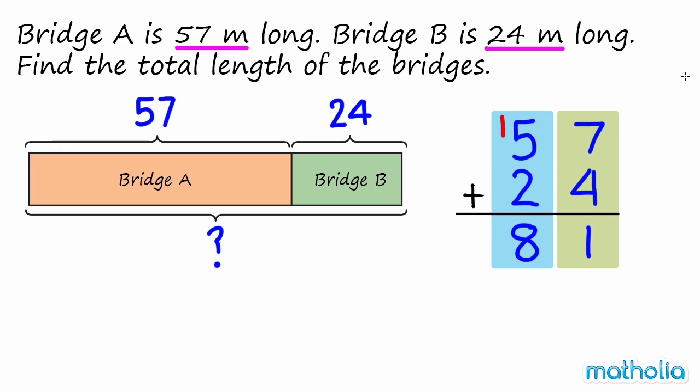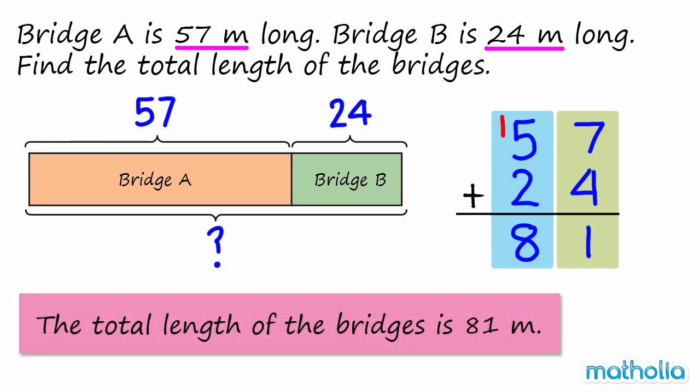57 plus 24 equals 81. So the total length of the bridges is 81 m.